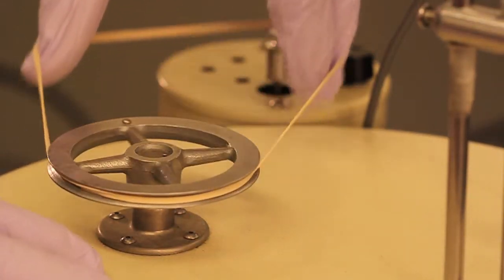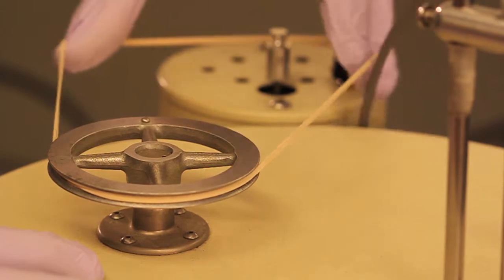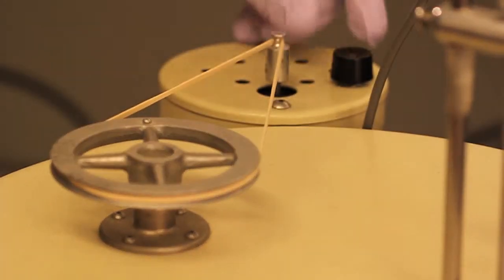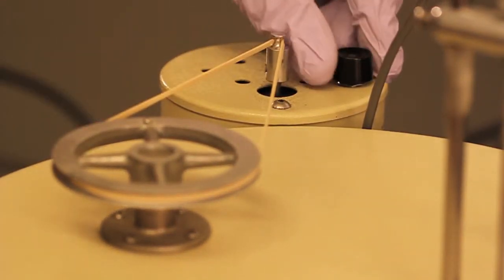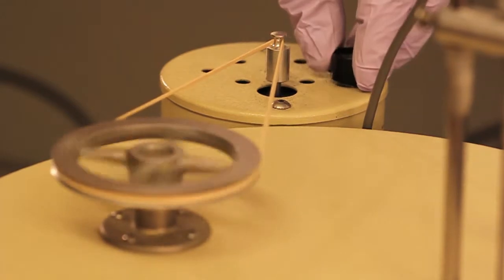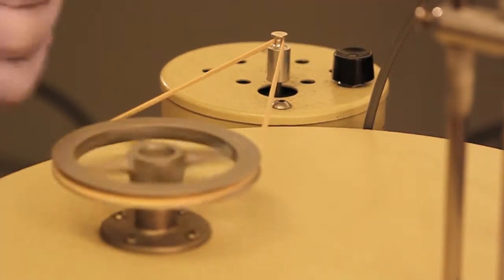You will use a rubber band as a belt that will connect the stirrer to the motor. Once the belt is in place, turn the black knob to engage the motor and make sure the stirrer is turning. At this point, you are ready to start acquiring data.